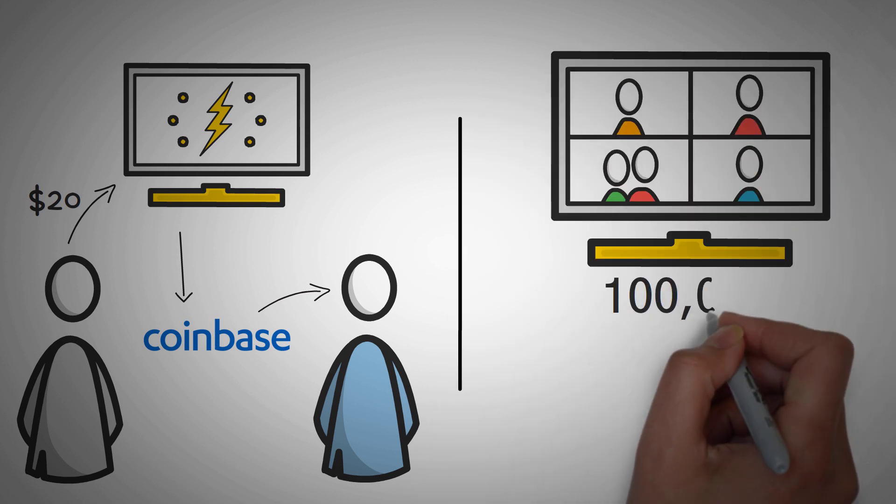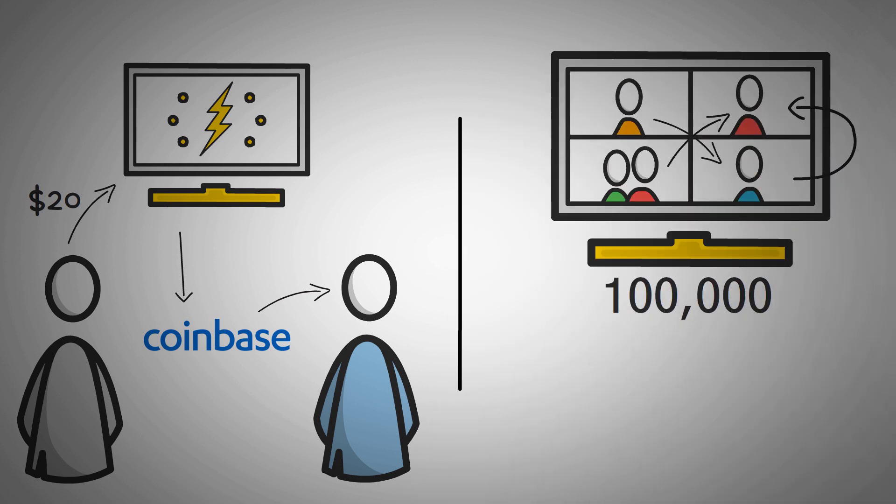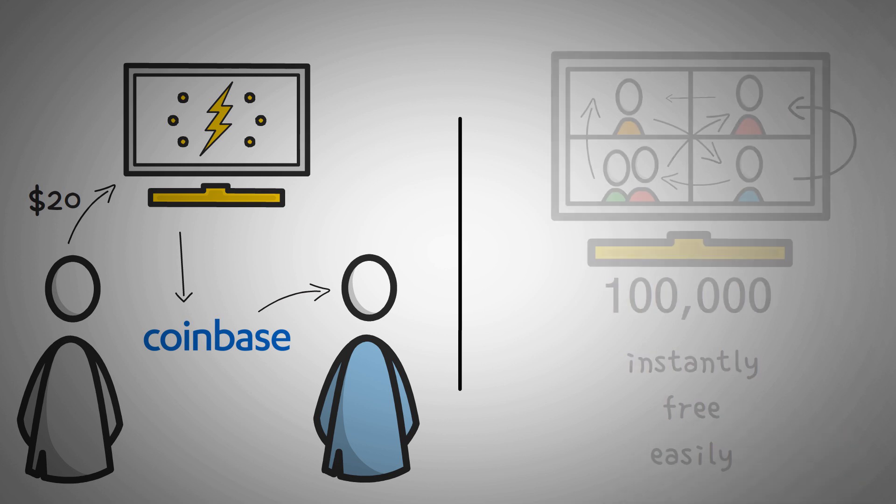Well, imagine a network with 100,000 people to where it's all interconnected and once you join that network, you can send your IOU version of a Bitcoin almost instantly, almost free, and very easily. That is what the Lightning Network is.